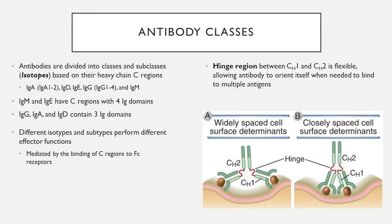The reason for having different isotypes, classes, and subclasses is that they perform different effector functions in the body, all mediated by the heavy chain C regions — the FC portions. The variable regions don't change much at all. The hinge region between the first and second heavy chain C regions is flexible, which allows the antibodies to orient themselves and bind to multiple antigens simultaneously. Binding to multiple antigens is important especially for the receptors, and helps augment the reaction to their antigens.